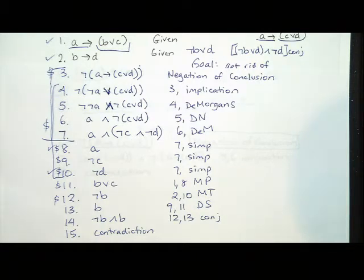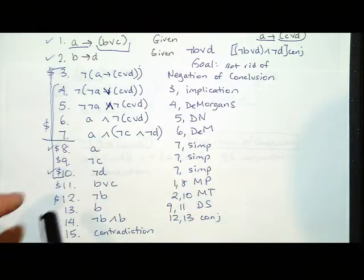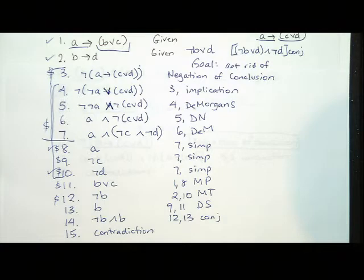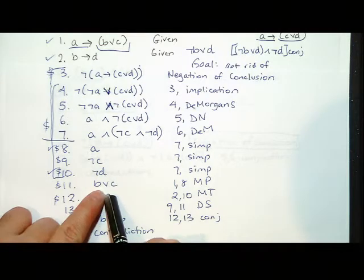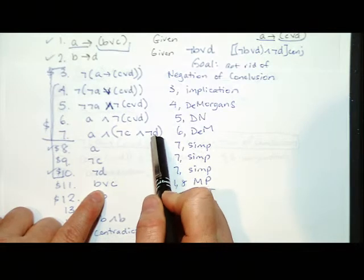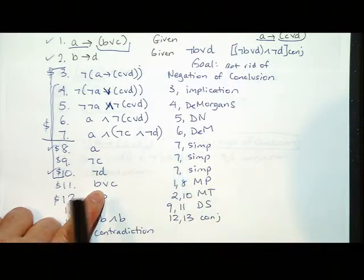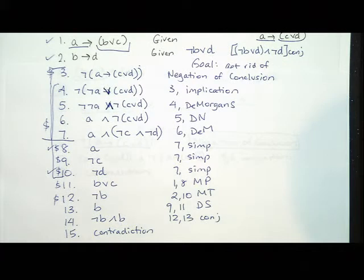It is not okay to skip lines eight, nine, and ten. You could, but if you did, the new things you derive would have to go into that AND statement, and Novanet probably won't let you do it anyway. When I derive B or C, I'd have to put B or C AND NOT C AND NOT D, because I have to actually use the whole line. When I combine lines, I'm combining whole lines — that's why I have to do simplification.